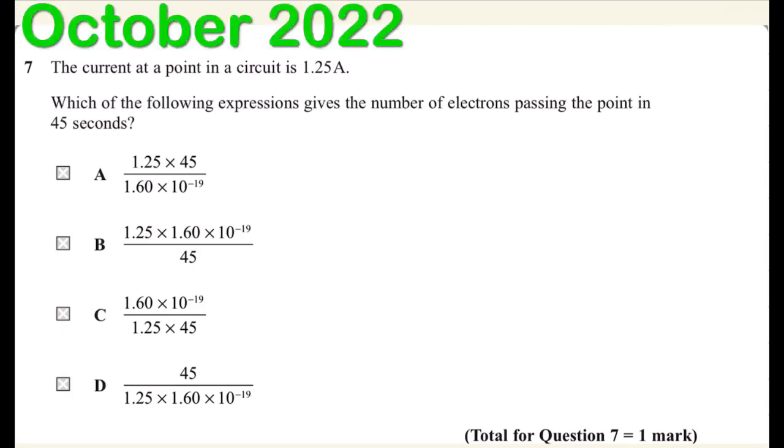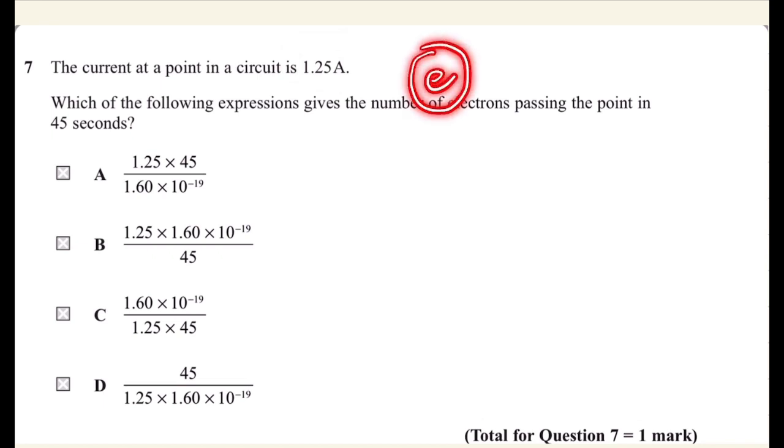Hi everyone, we have October 2022. The current at a point in a circuit is 1.25 amperes. Which of the following expression gives the number of electrons passing the point in 45 seconds?